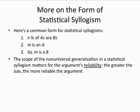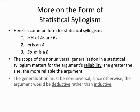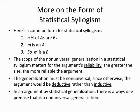It is important to note the scope of the quantifier in non-universal generalizations: the greater the size, the more reliable the argument. You must keep in mind that the generalization can never be universal, because then the argument would become a deduction. Any statistical syllogism will always have at least one premise that contains a non-universal generalization.